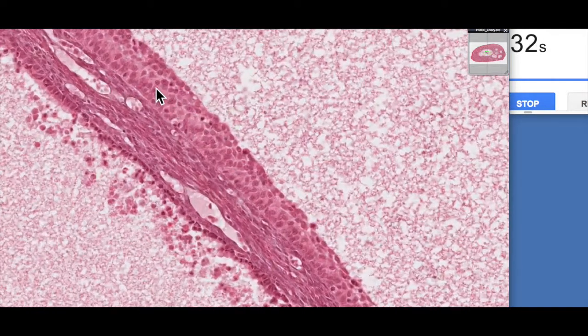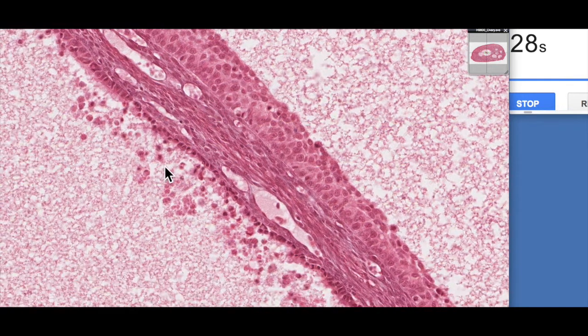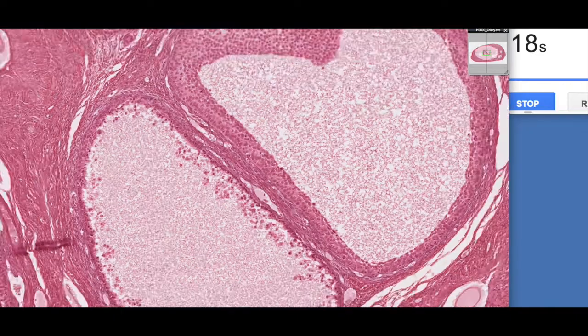If we zoom in we can see some of the major features. A healthy follicle has a nice zona granulosa here, nice healthy looking nuclei, whereas over here you can see the cells are quite disrupted. They're not forming this nice tightly packed cellular layer. That's a really good indication of atresia undertaking place.